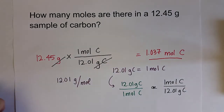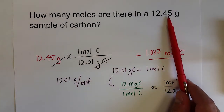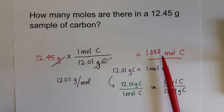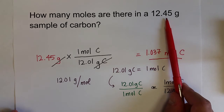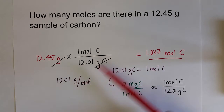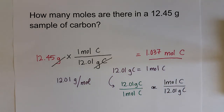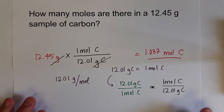Does that make sense? Yes — one mole of carbon is 12.01 grams, and we have pretty close to 12.01 grams, so we should have pretty close to one mole. And we do. 12.45 is a little bit more than 12.01, so we've got a little bit more than one mole. Anytime you can check whether these numbers make sense, it's always a good idea to do that.